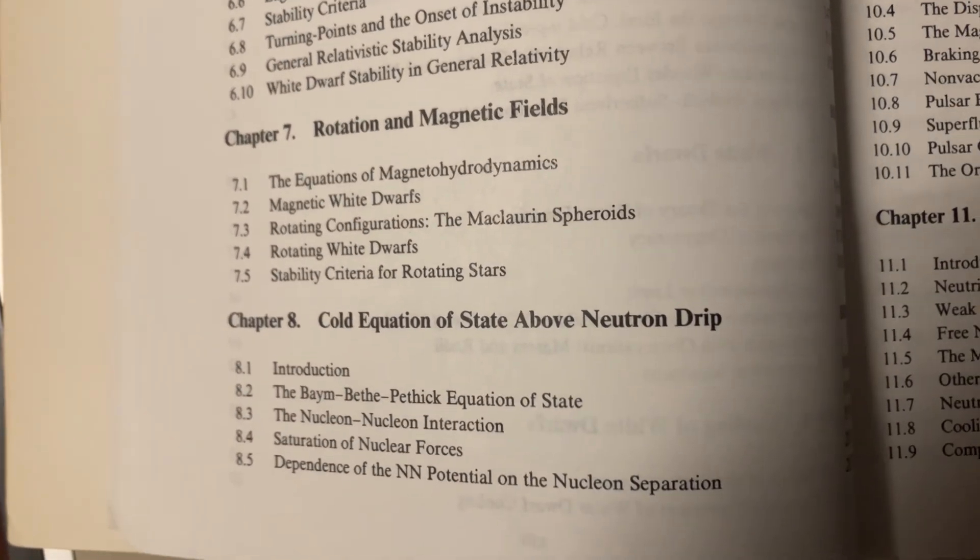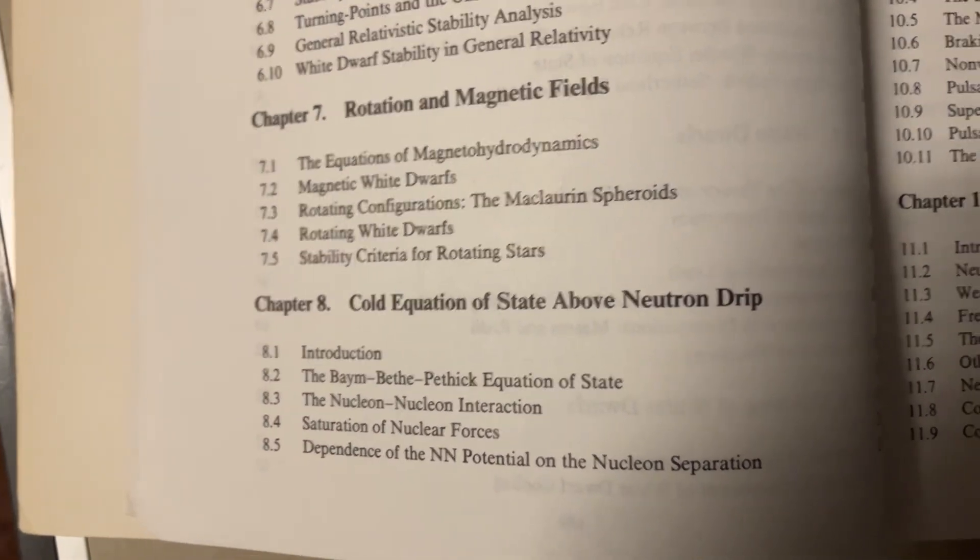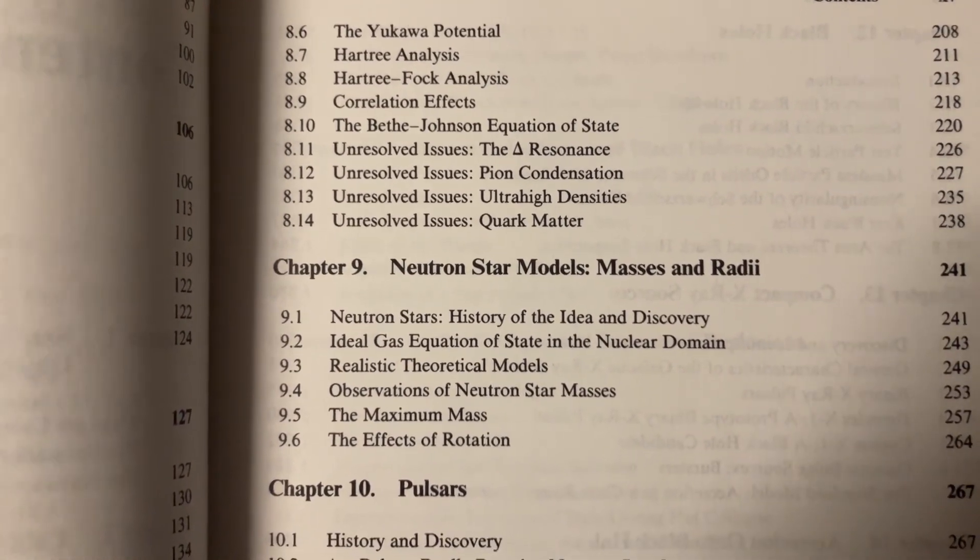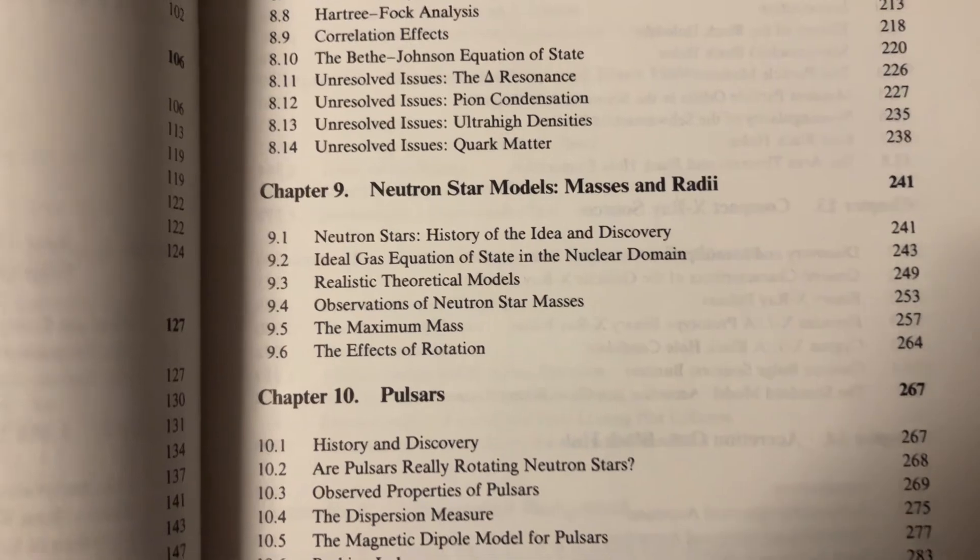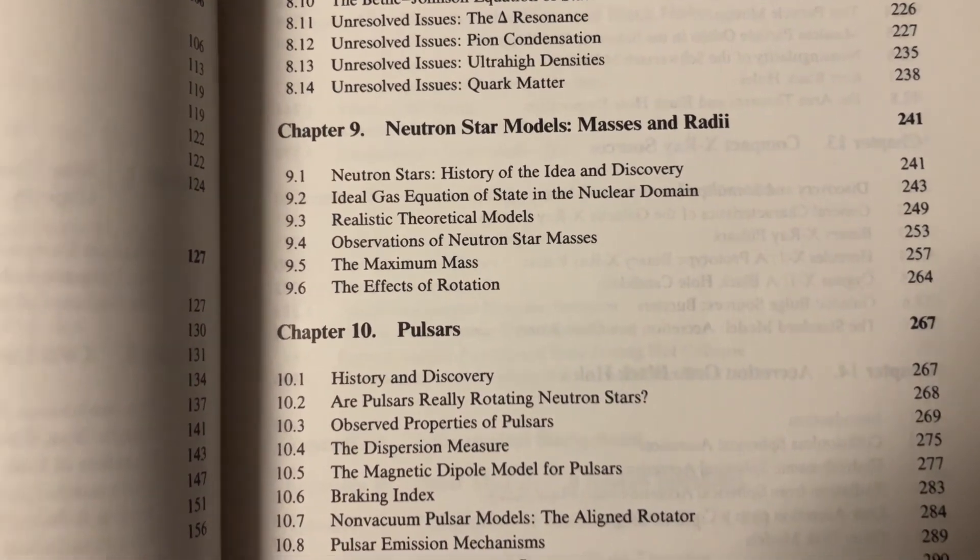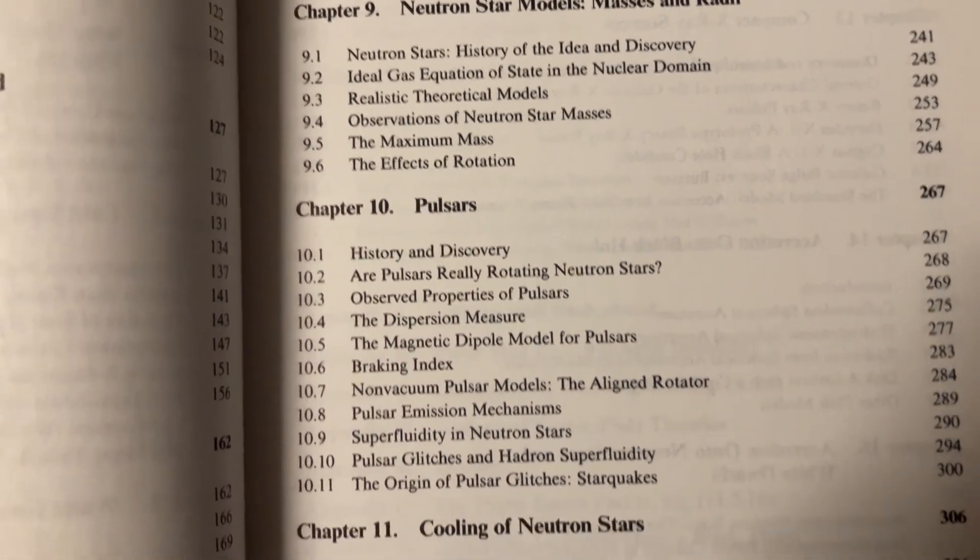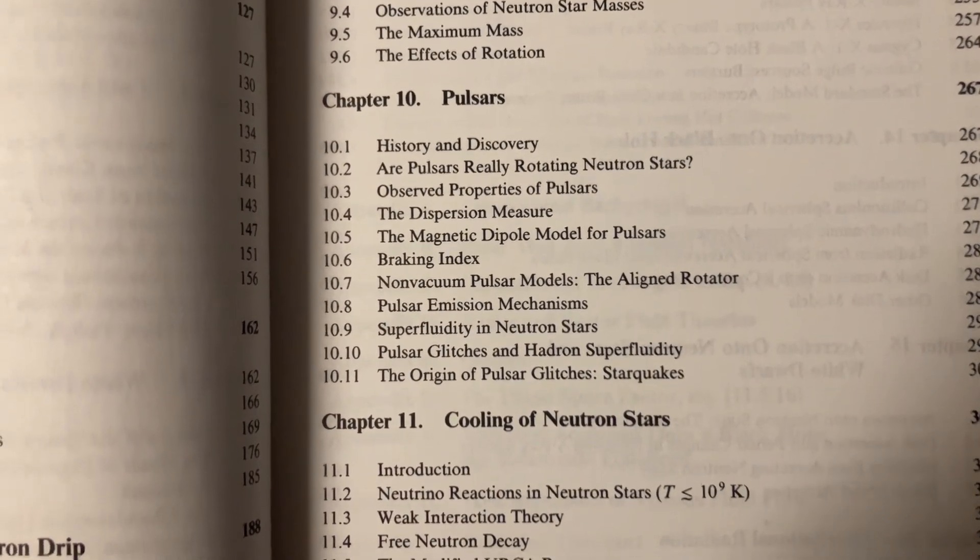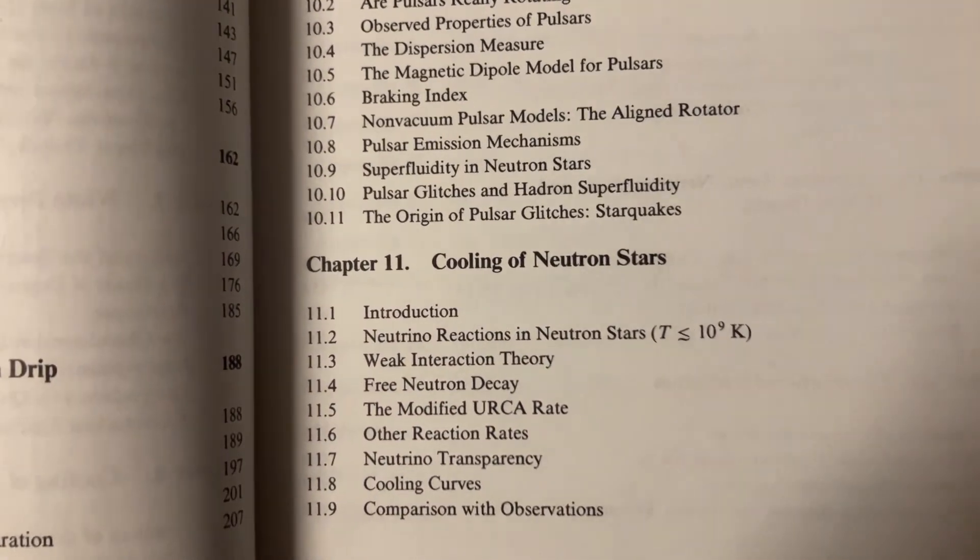Cold equations, a state above neutron drip. I'm going to have to figure out what that all is. Nuclear forces and Hartree-Fock. I don't know. Quark matter. Neutron star models. Theoretical models. Pulsars. The braking index. Hadron superfluidity. Star quakes. Free neutron decay. The cooling of neutron stars.